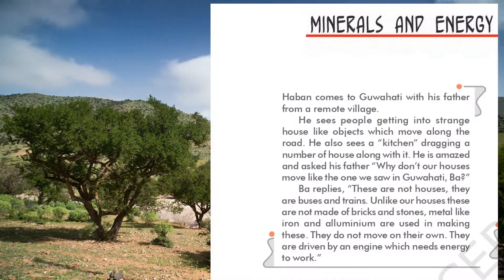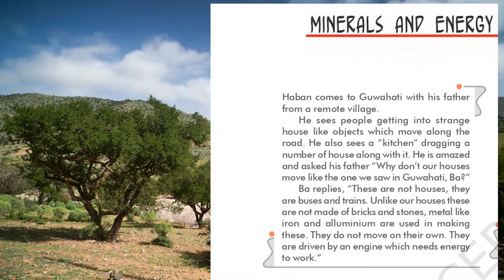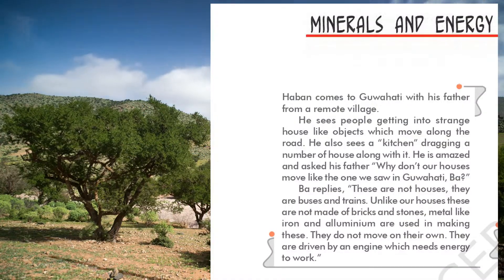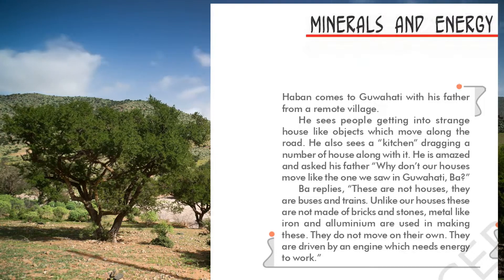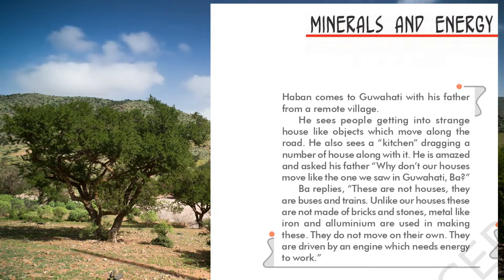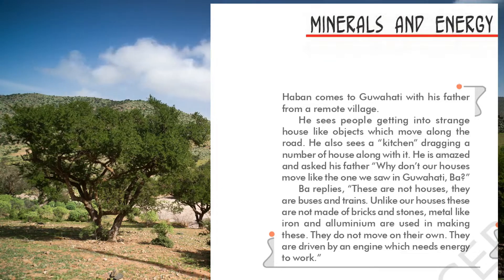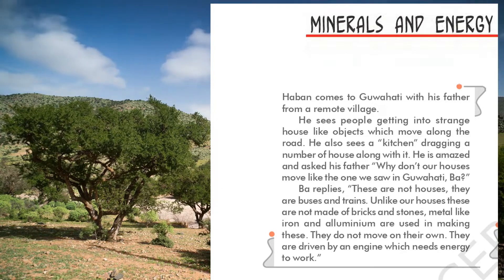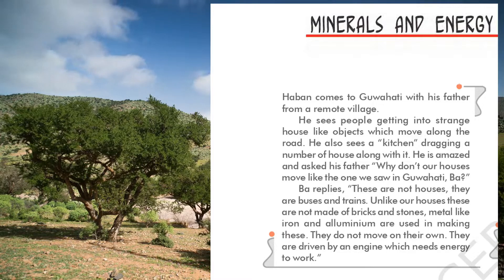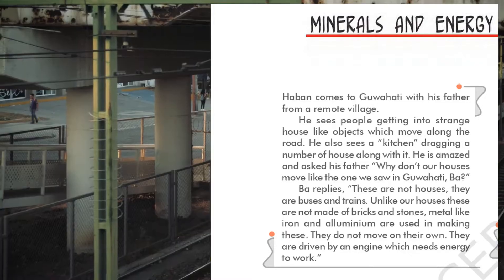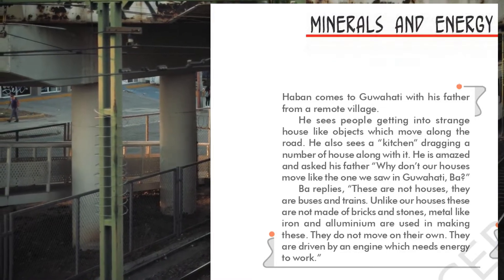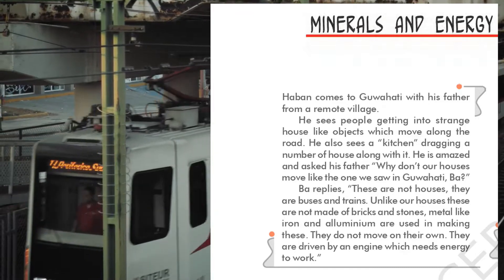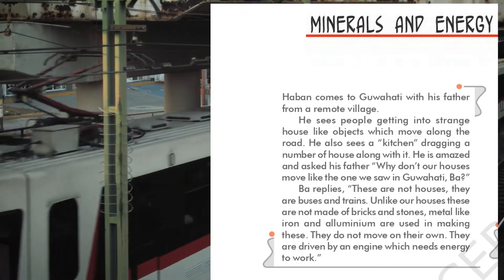Haben comes to Guwahati with his father from a remote village. He sees people getting into strange house-like objects which move along the road. He also sees a kitchen dragging a number of houses along with it. He is amazed and asks his father, 'Don't our houses move like the one we saw in Guwahati, Ba?' Ba replies, 'These are not houses — they are buses and trains.'